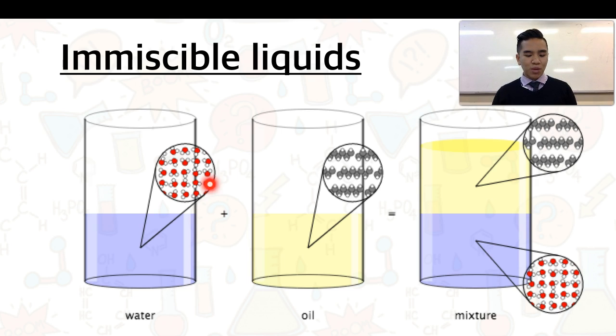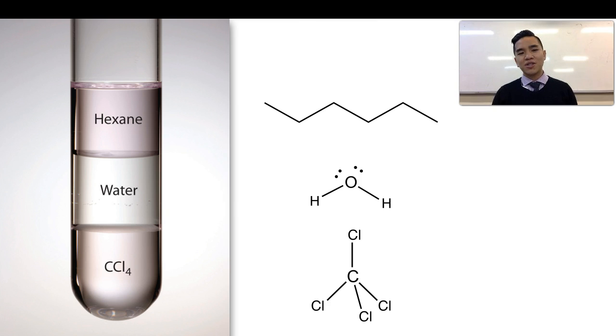Water being a polar substance, oil being nonpolar. Like dissolves like, and in this case we have two things that are unlike one another. We can see this image of a test tube that contains three different liquids. We've got hexane at the top, water in the middle, and then carbon tetrachloride on the bottom. They separate because of differences in density.